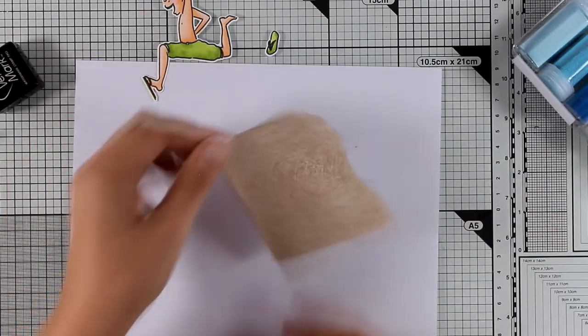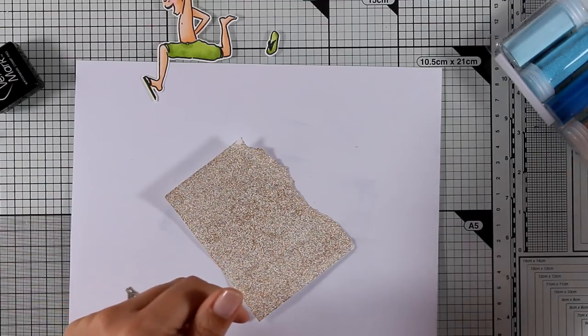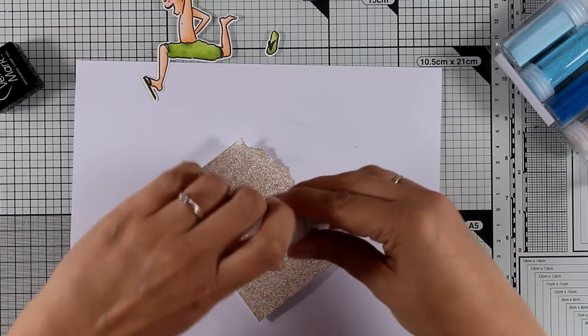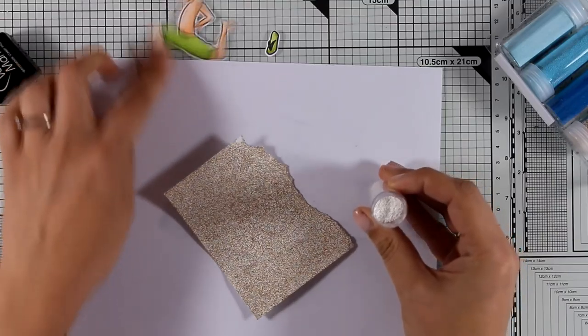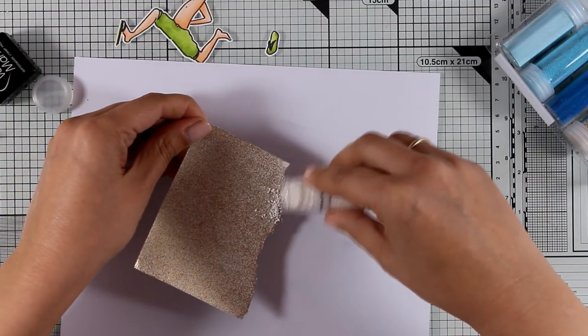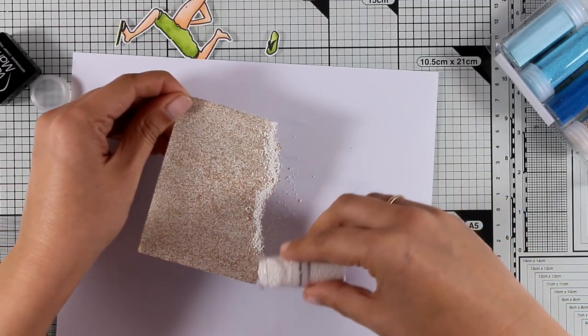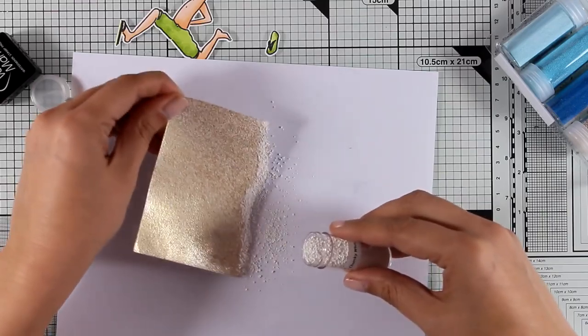I'm now going to apply the chunky white embossing powder only at the edges. This embossing powder is chunky which means it's not going to stick very well on top of Versamark, but it is going to be stuck there good enough for me to heat set everything from underneath. I'm applying a little bit there and tapping off the excess.